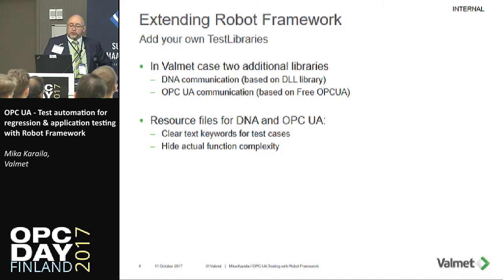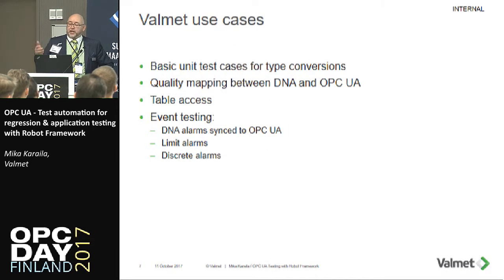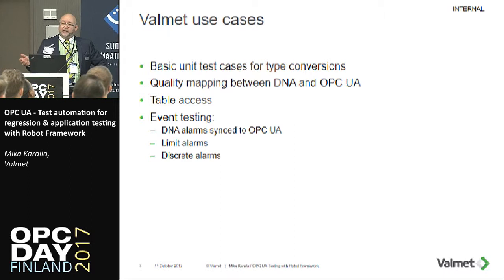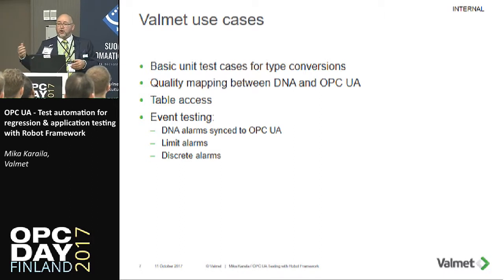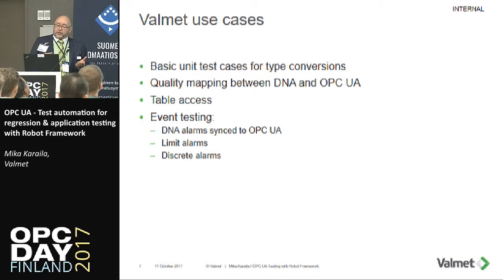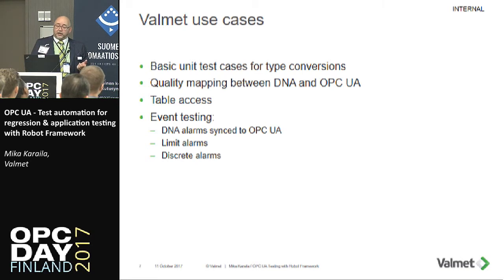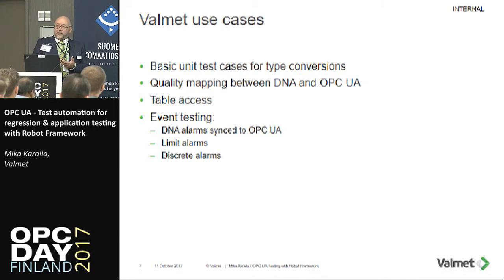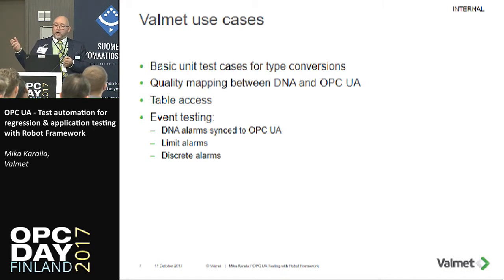In our use cases, we have been using basic unit test cases for type conversions between DNA types and OPC UA types. We also use this to make quality mapping between the DNA fault pitch and OPC UA quality. Then we have different kinds of table access cases — one-dimensional, two-dimensional, and three-dimensional tables. For event testing, we have been implementing cases to sync DNA alarms to OPC UA alarms and events.